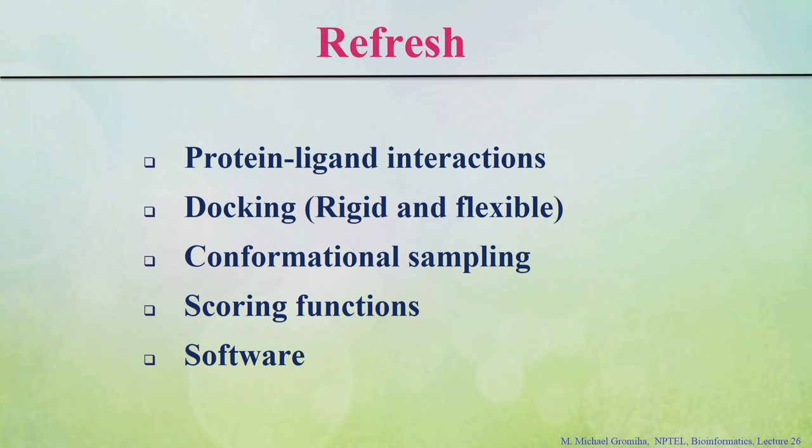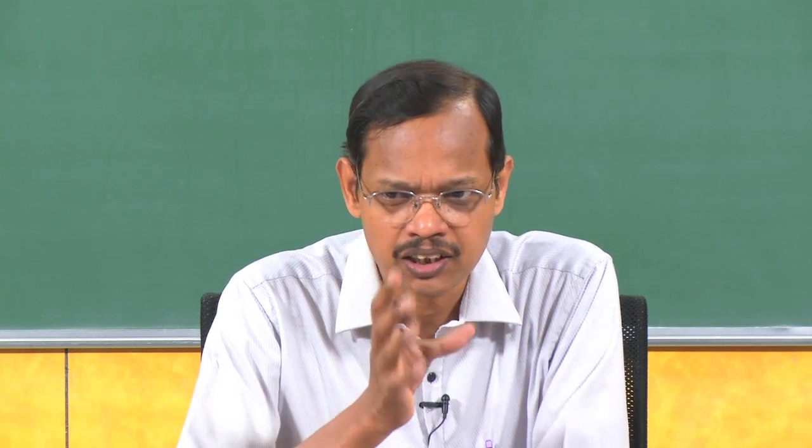To do docking we need proteins — mainly active sites — as well as ligands. When we do docking, there are two aspects to consider: one is conformational sampling and the second is the scoring function. For sampling, there are two approaches: systematic or stochastic. Systematic means you carry out all possible conformations — it is time-consuming but gives complete data, and it is good for small compounds.